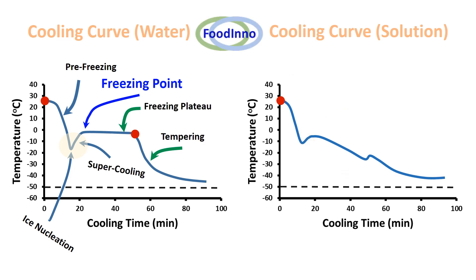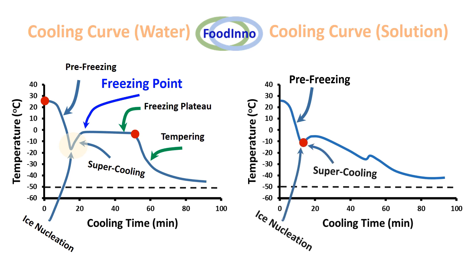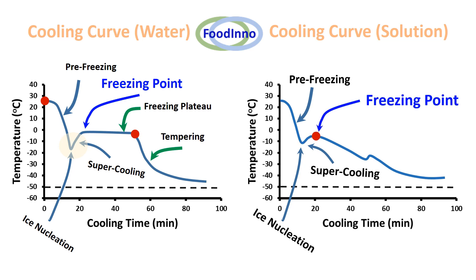First, we observe pre-freezing, when sensible heat is removed to reduce the temperature. Second is ice nucleation — at this stage, ice formation is not at equilibrium, meaning ice formation and melting are both observed and a critical mass of ice has not yet formed. Third, the temperature reaches its highest point — the freezing point.